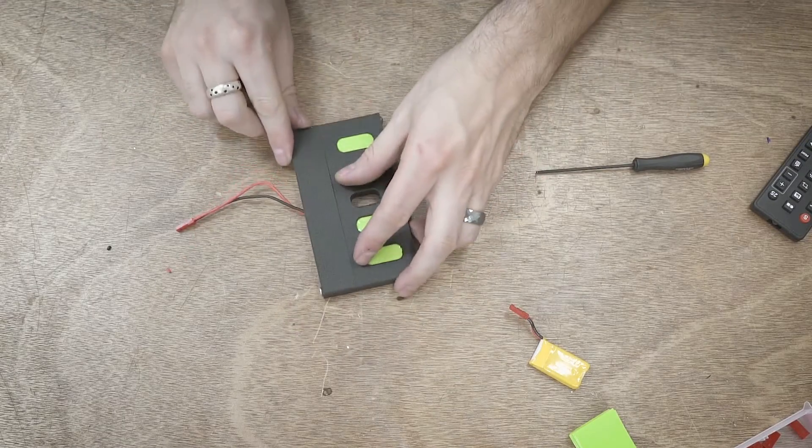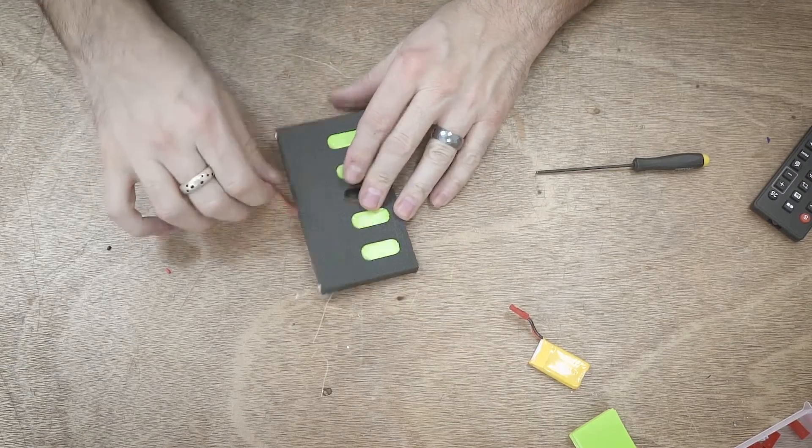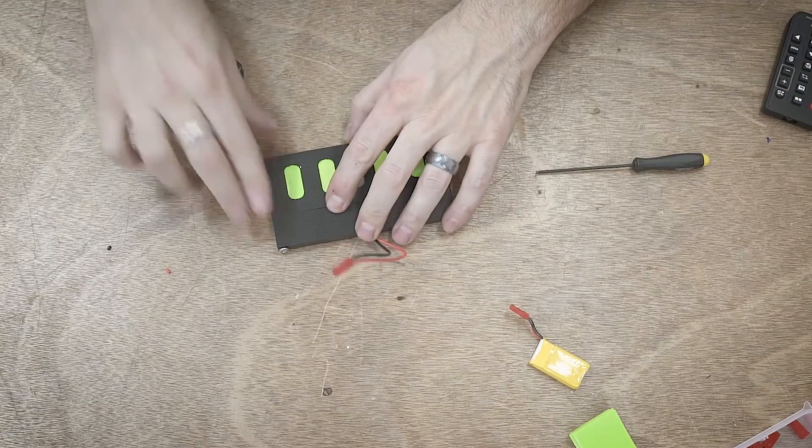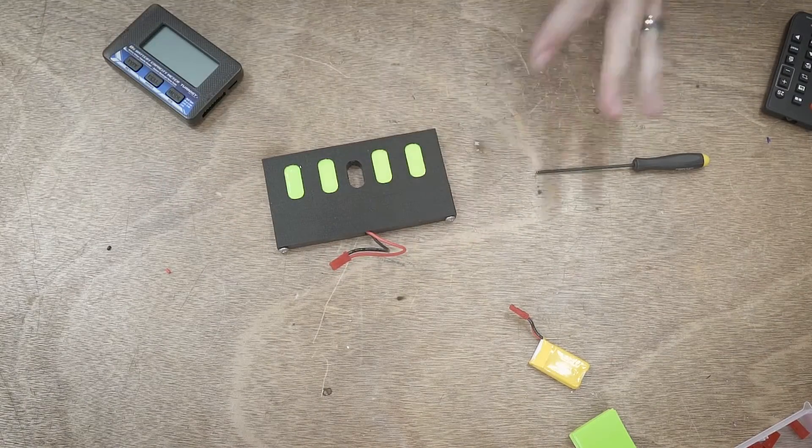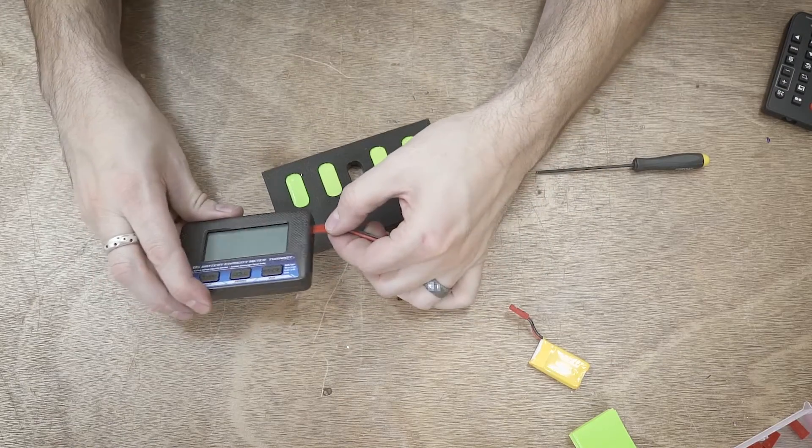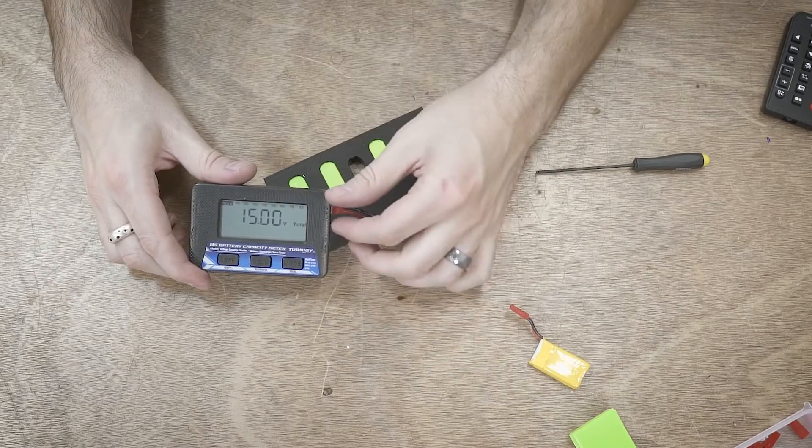There we go. Finished battery pack. Last thing to do is to test the voltage, make sure we're getting the right voltage out of it. Each one of these cells is four volts, somewhere thereabouts. So I should be getting somewhere around 15, 16 volts. 15 volts. Looks like everything is good.